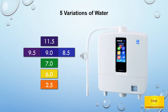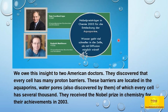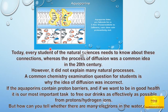Five variations of water. We owe this insight to two American doctors who discovered that every cell has many proton barriers. These barriers are located in the aquaporins — water pores — also discovered by them, of which every cell has several thousand. They received the Nobel Prize in Chemistry for their achievements in 2003. Today, every student of the natural sciences needs to know about these connections, whereas diffusion was the common idea in the 20th century. If the aquaporins contain proton barriers and if we want to be in good health, it is our most important task to free our drinks as effectively as possible from protons or hydrogen ions.